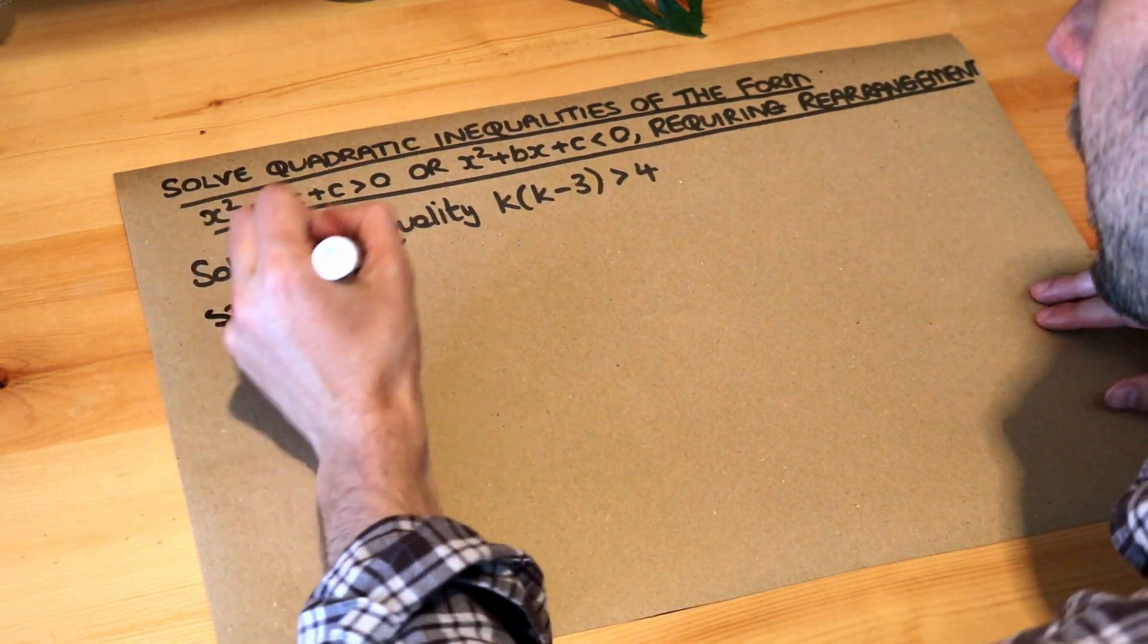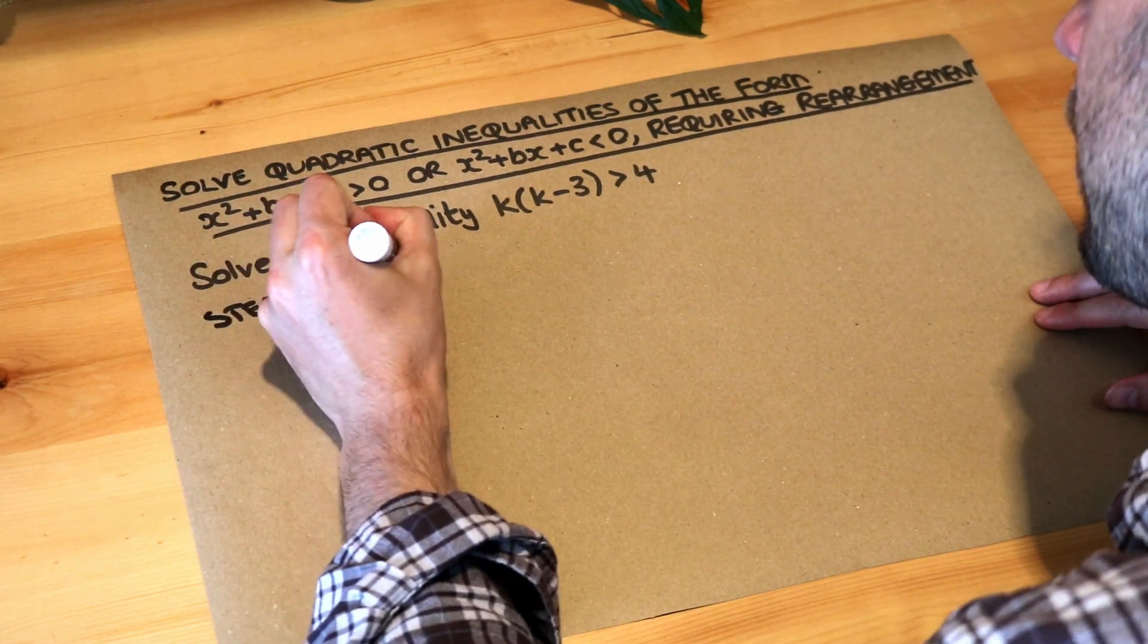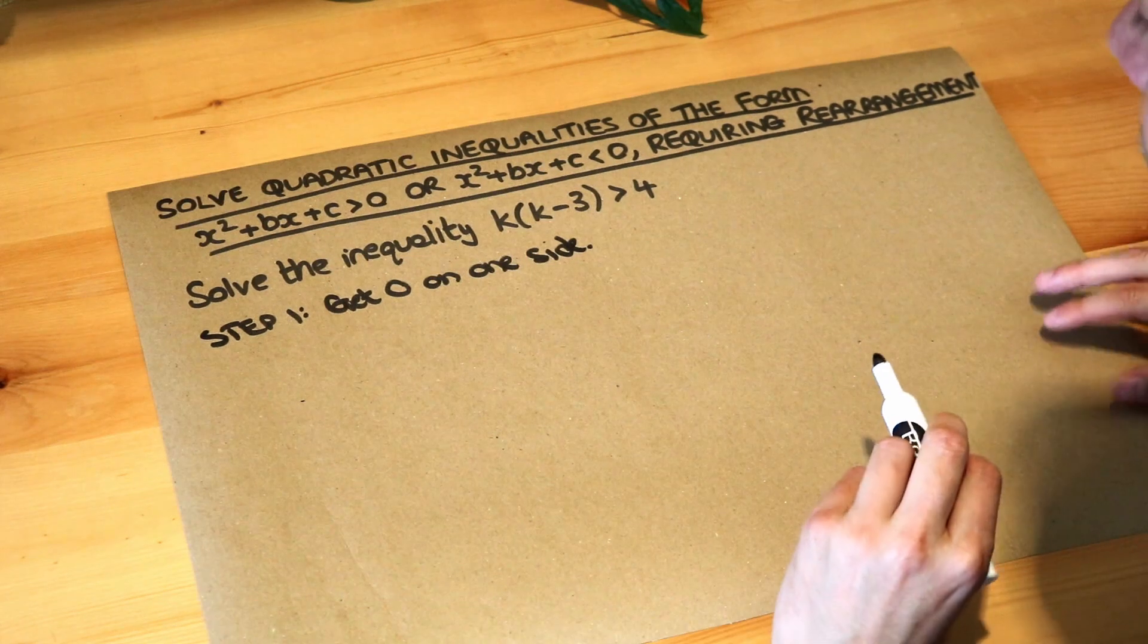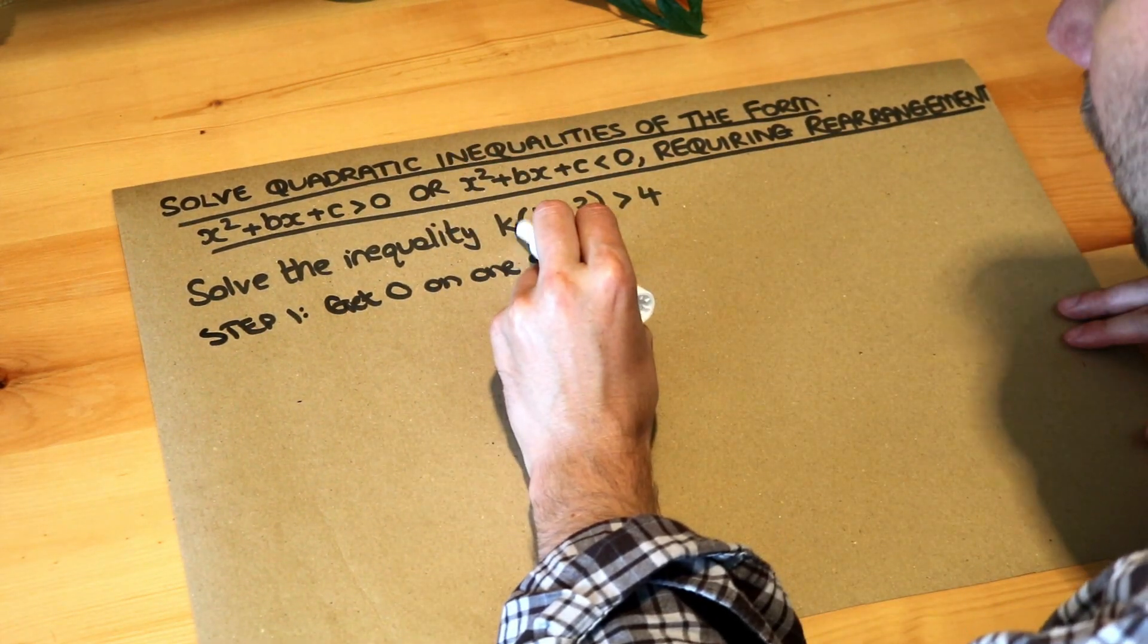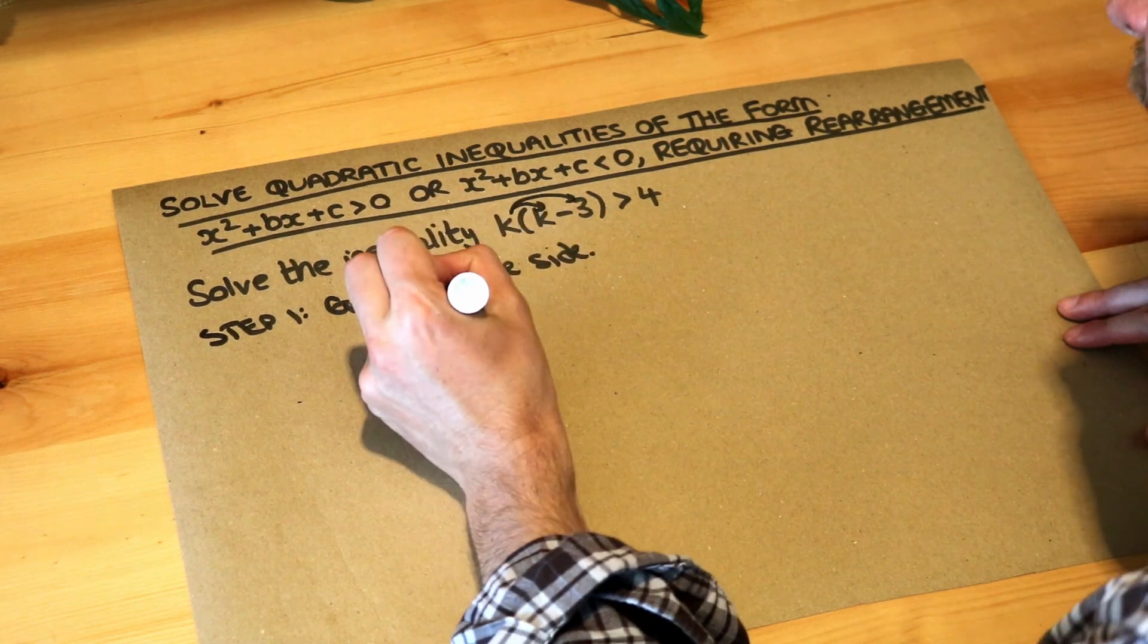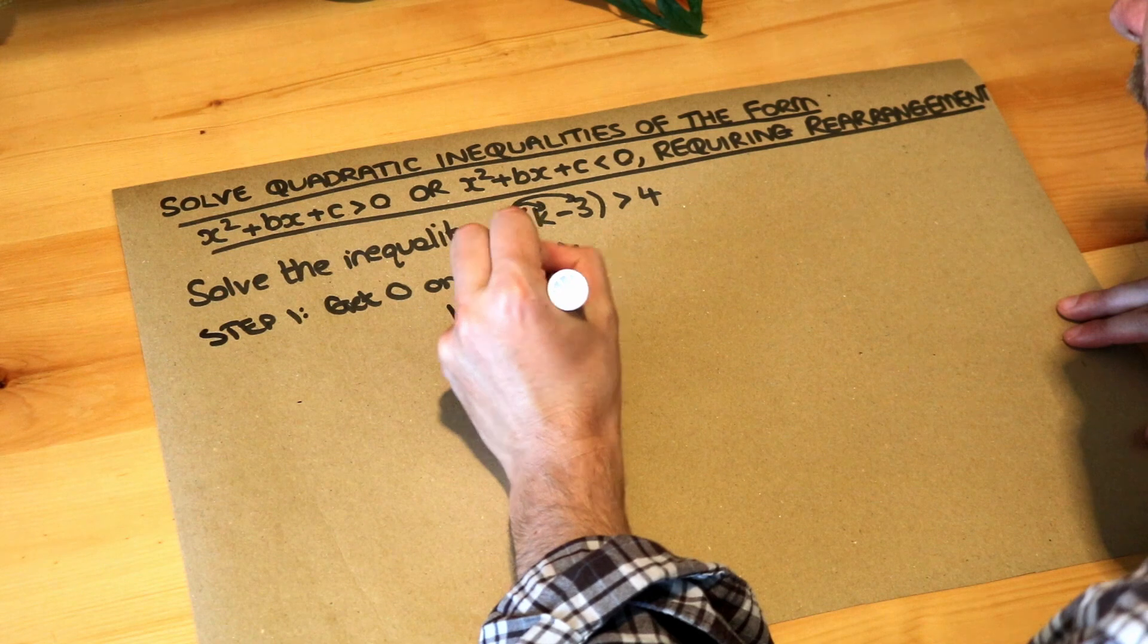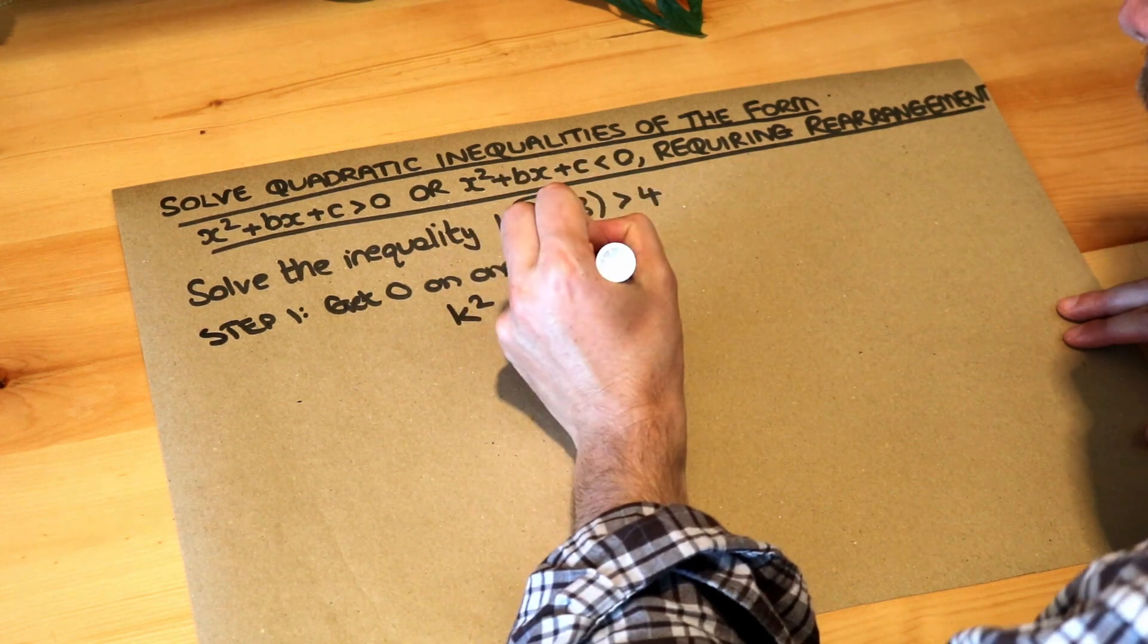So step one is to expand out any brackets and get zero on one side. To expand the bracket, we have the thing in front of the bracket times each of the things inside: k times k is k squared, k times minus three is minus three k, and we got greater than four.